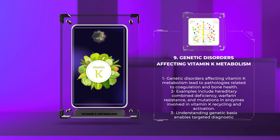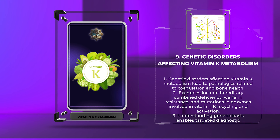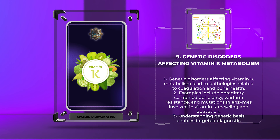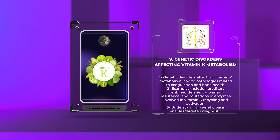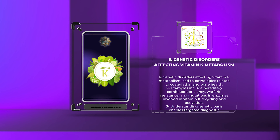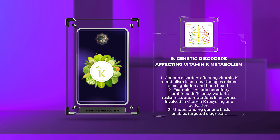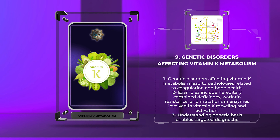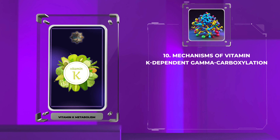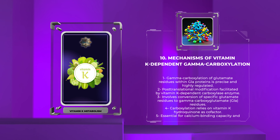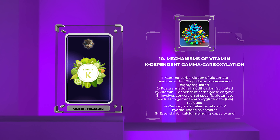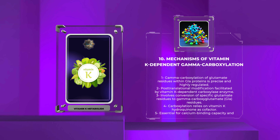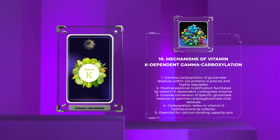Vitamin K deficiency can lead to a range of clinical manifestations, including bleeding disorders and impaired bone health. Clinical features of vitamin K deficiency may include easy bruising, mucosal bleeding, and, in severe cases, spontaneous intracranial bleeding. Management of vitamin K deficiency involves identifying the underlying cause, correcting vitamin K levels through dietary supplementation or parenteral administration, and monitoring clotting parameters to ensure optimal hemostasis. Timely recognition and treatment of vitamin K deficiency are crucial to prevent complications and maintain overall health.